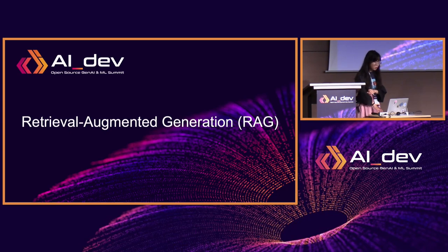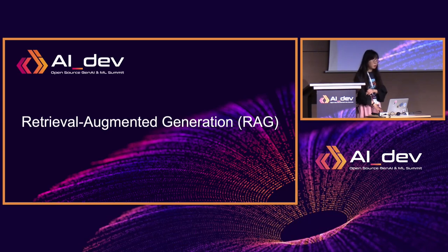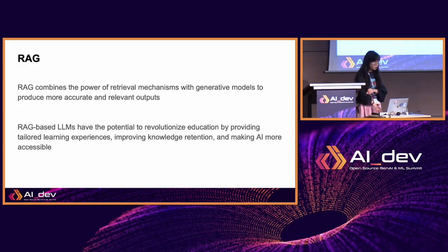RAG uses the knowledge base and past course notes or TA notes, turning those materials into a vector database and making embeddings to add on top of the LLM. This helps it perform better and answer student questions accurately. It combines the power of a retrieval mechanism with the LLM to produce relevant output, making AI more accessible to everyone.